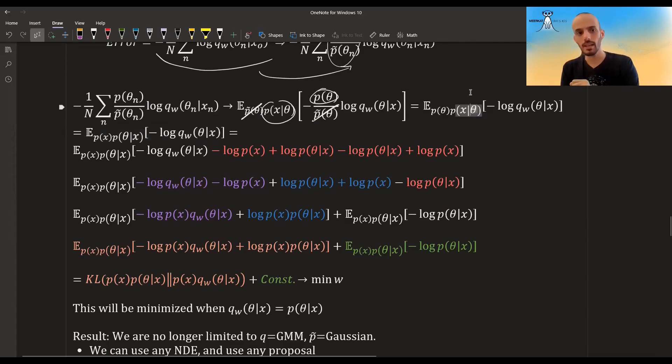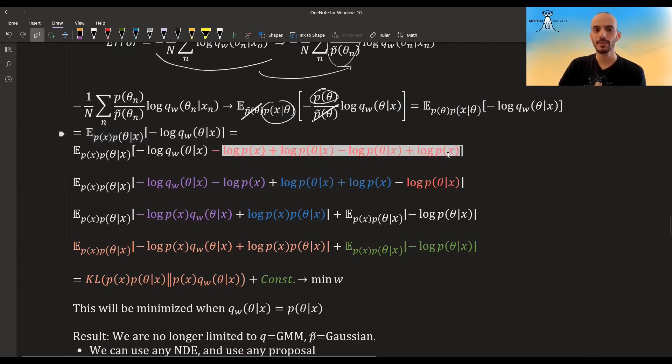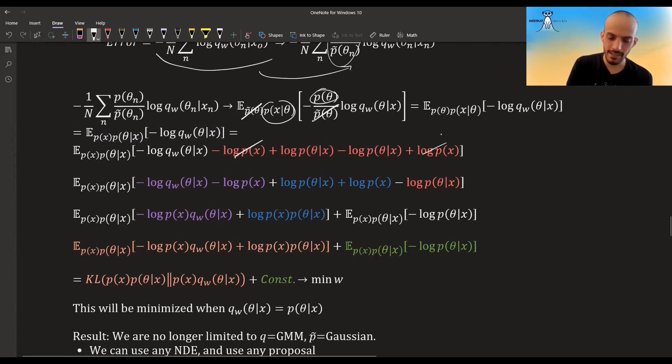Then we could treat this and this as the distribution over which we are taking the expectation, so we will reach this thing over here. Now this is just the joint broken down in one way. We could also break it down the other way—we can say it's the probability of x and the probability of theta given that x. Now we can add a lot of terms that cancel out.